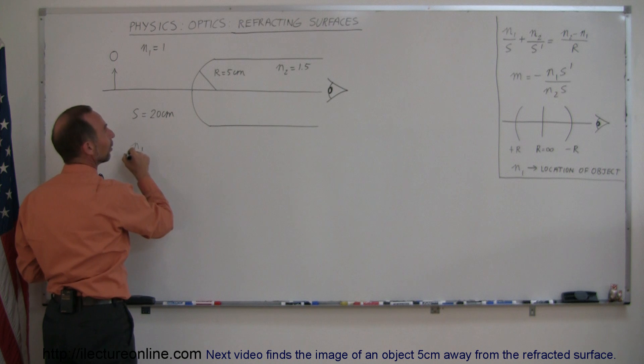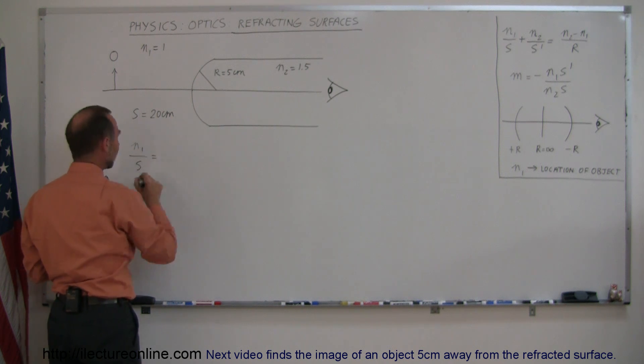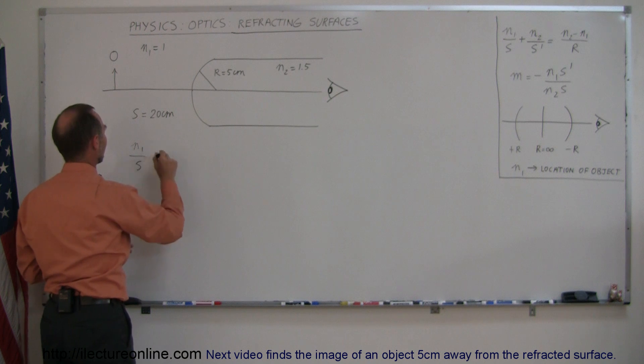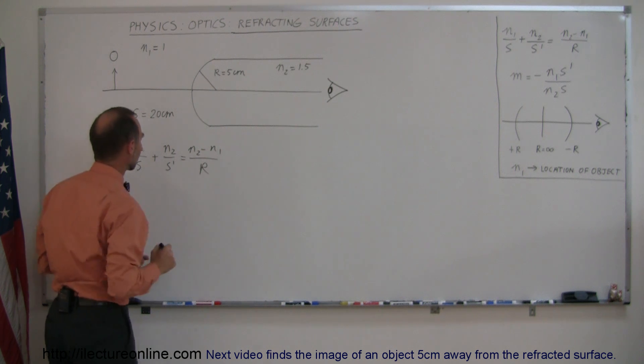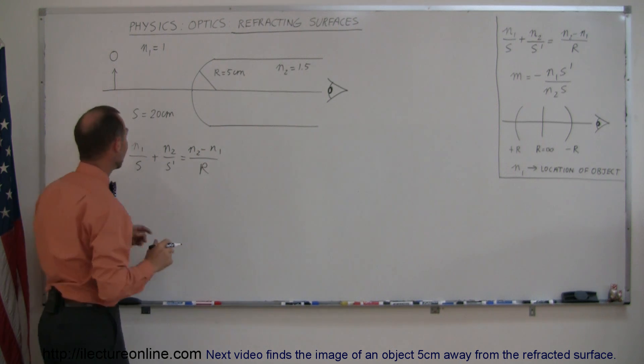So we have N1 over S plus N2 over S prime is equal to N2 minus N1 over R. Now, plug in the numbers that we have.